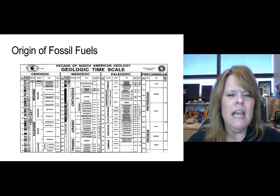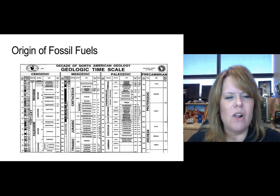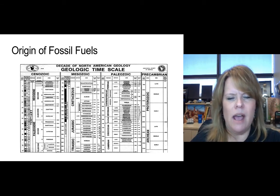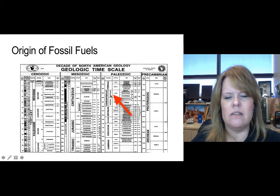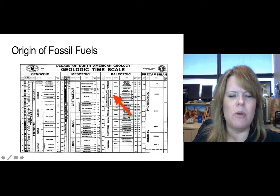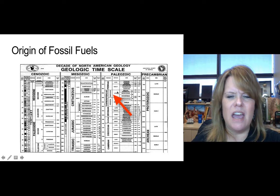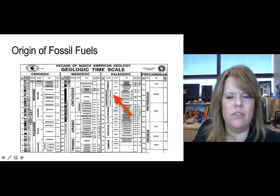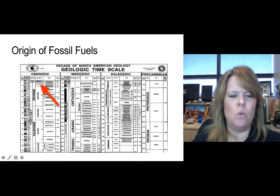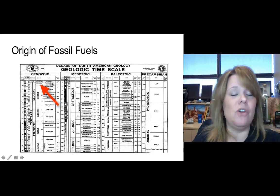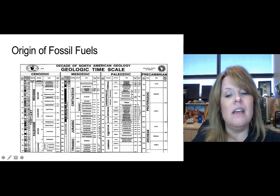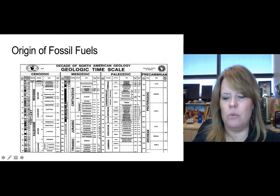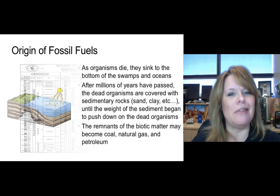Looking at the North American geologic timescale, the Pennsylvanian period sits within what's called the Carboniferous. You don't need to worry about all the ages and epochs right now. The point is this stuff is pretty old. We sit way over in the Quaternary right now, in the Holocene. A lot of time has passed since we started making anthracite back in the Paleozoic.